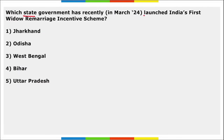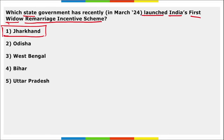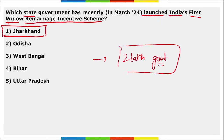Next: which state government recently launched India's first widow remarriage initiative scheme? It is Jharkhand that has launched India's first Widow Remarriage Incentive Scheme. Under this scheme, women who choose to remarry after the death of their husbands will be given an incentive of ₹2 lakh by the government, provided the beneficiary is of marriageable age and is not a government employee, pensioner, or income taxpayer.